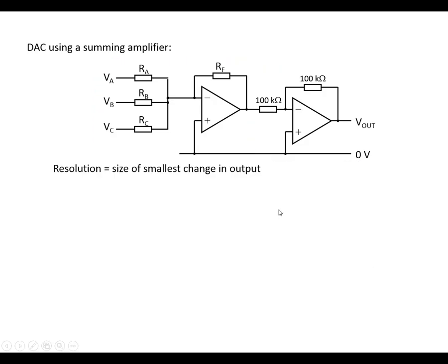Now, the resolution of this is going to be the smallest change in output, and that's going to be due to the least significant bit. Using the convention, we're going to say that A is the least significant bit. So, when that's high, it's how many volts we get at V out.